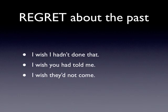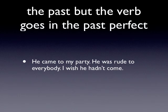When we're talking about regrets about the past, we have to go even further back in time with the verb. So: 'I wish I hadn't done that,' 'I wish you had told me,' 'I wish they hadn't come.' The verb is not in the past simple but in the past perfect — even further in the past. For example: 'He came to my party and was rude to everybody — I wish he hadn't come.' That's the past perfect.